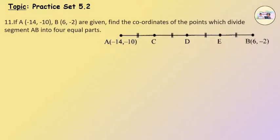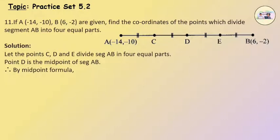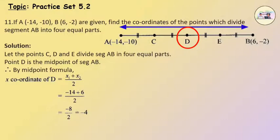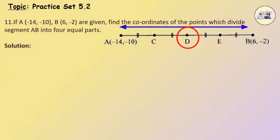Question 11. If A and B are given, find the coordinates of the points which divide segment AB into 4 equal parts. Let the points C, D and E divide segment AB into 4 equal parts. Point D is the midpoint of segment AB. By the midpoint formula, the x-coordinate of D equals x1 plus x2 upon 2, which equals minus 14 plus 6 upon 2, which equals minus 8 upon 2, which equals minus 4.